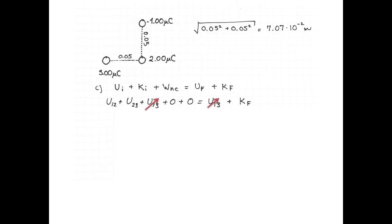So the potential energy of pair 1-3 cancels out because it's there at the beginning and there at the end. So the final kinetic energy of the 2 microcoulomb is equal to the potential energy of pair 1-2 plus the potential energy of pair 2-3.